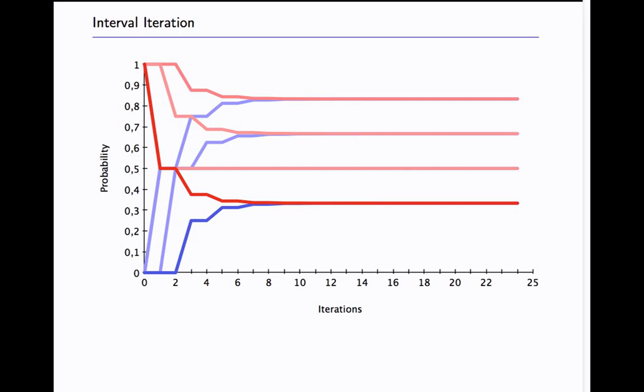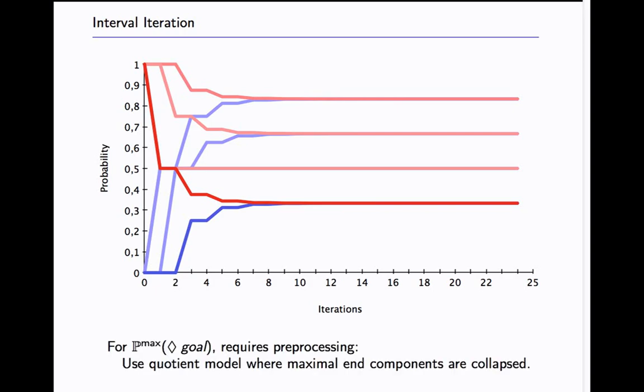This is what this looks like. So you have the upper value iteration also converging on the same value. As Haddad and Monmarch point out, for P_max computations you also have to do some preprocessing. Basically you have to remove or collapse all the maximal end components because otherwise the iteration from above can get stuck in some values that are too high.